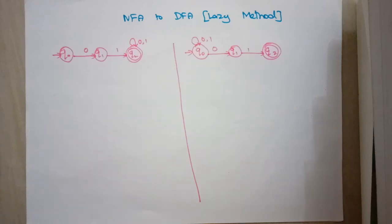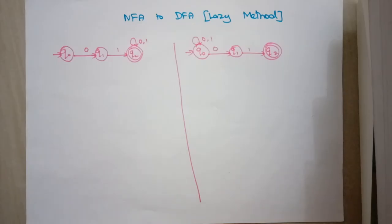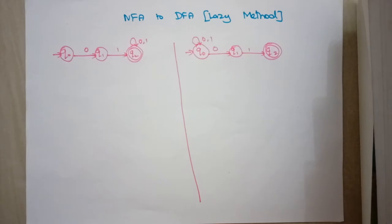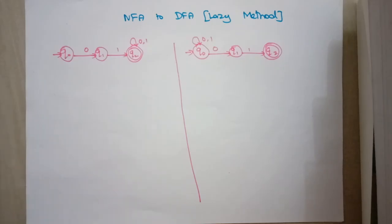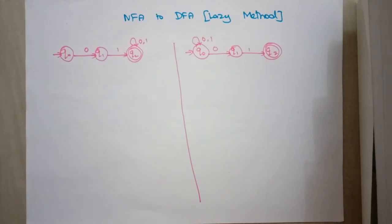In this video we are going to convert an NFA to DFA using the lazy method. It is similar to the subset construction method, which we already discussed. One drawback of the subset construction method is the number of possible subsets — for an NFA with three states, you need to construct 2^3 = 8 possible subsets.